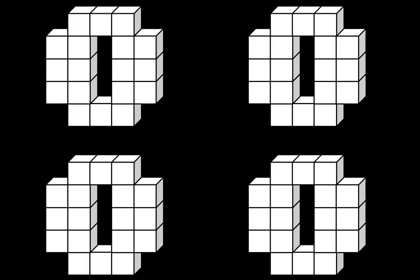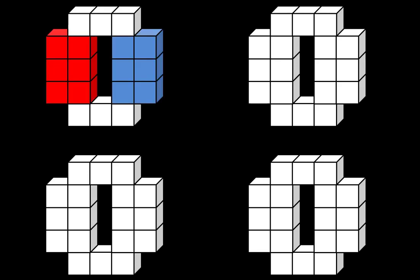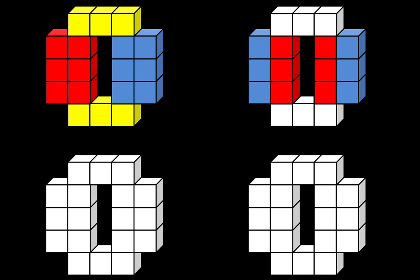Let's continue by seeing how some people break this structure apart. Some people break this apart into two groups of 6 on the sides and another group of 6 on the top and bottom. Other people see a group of 6 on the outside, another group of 6 on the inside, and another group of 6 on the top and bottom.